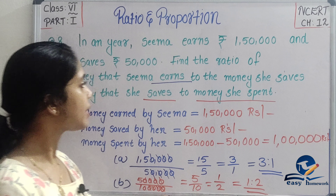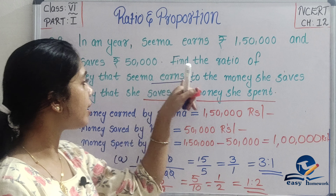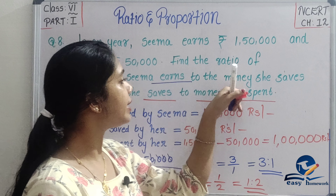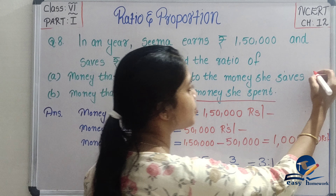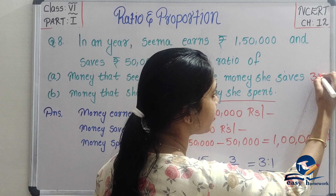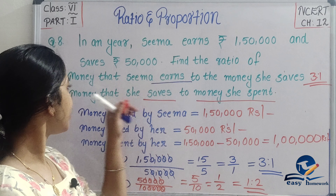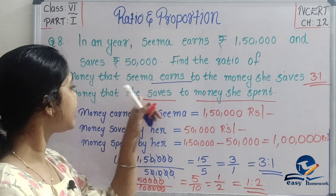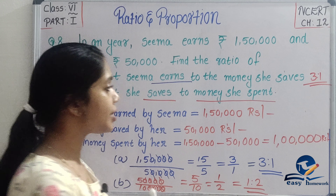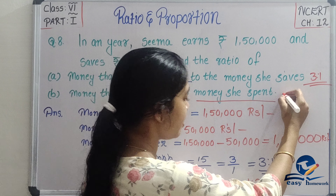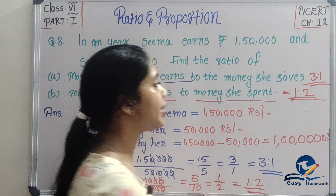So the answers are: find the ratio of money that Sema earns to money she saves — the ratio is 3 is to 1. Next, find the ratio of money she saves to money she spent — the ratio is 1 is to 2.